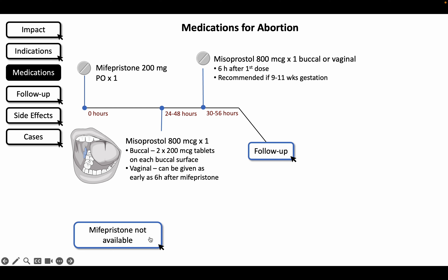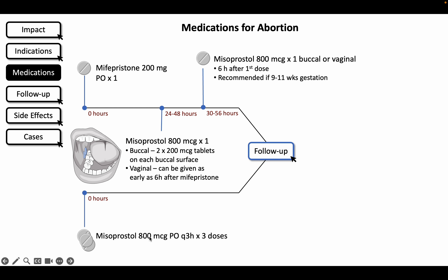If mifepristone is not available, an alternative, though less efficacious method, is to take misoprostol 800 mg every 3 hours for a total of 3 doses. You may also wish to prescribe antiemetics and NSAIDs for pain.